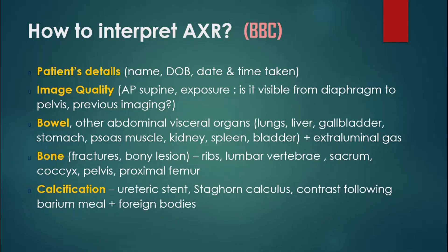Then you get into C, which is calcification. Calcifications are highly opaque, so they appear very white on an abdominal X-ray. Things like calculi, ureteric stents, or even contrast after a barium meal, as well as foreign bodies like surgical clips or IV lines, can be noticed here. Finally, you want to summarize your findings and mention your impression of what the pathology is.